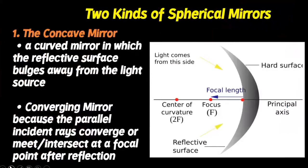The concave mirror is a curved mirror in which the reflective surface bulges away from the light source. It is also known as the converging mirror because the parallel incident rays converge or meet or intersect at a focal point after reflection.